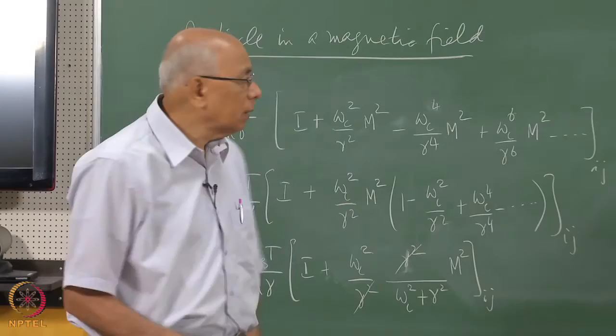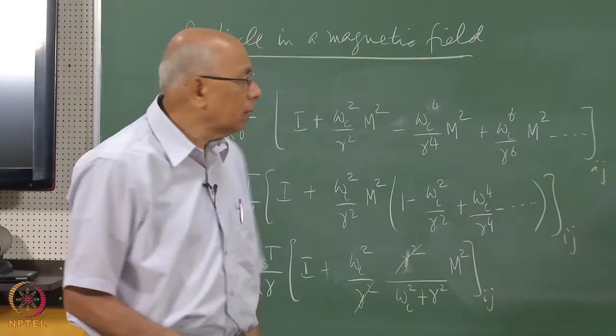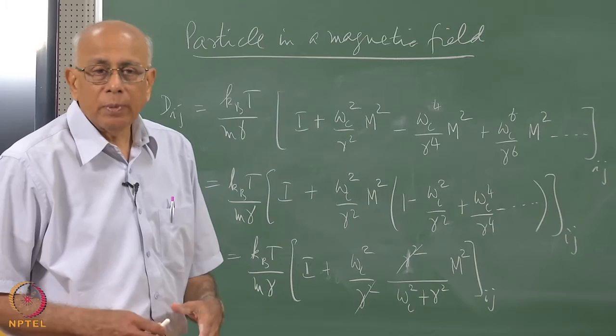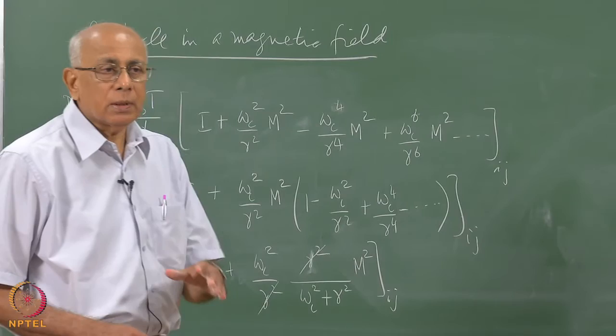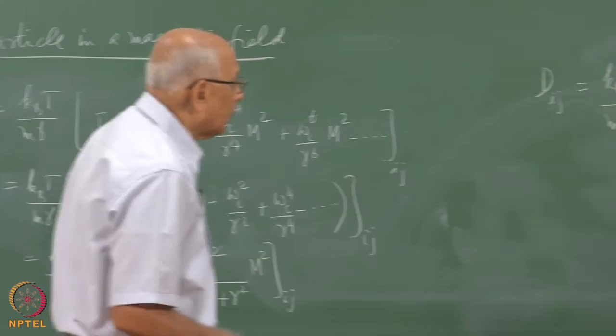This result gives the diffusion tensor directly. In the presence of the magnetic field, the problem is completely solvable and remains diffusive despite the velocity-dependent force. The diffusion constant is anisotropic: it is not the isotropic kT/(m·gamma) but is modulated in the transverse direction by the factor depending on gamma and omega_c. This is a quick method — we did not need the velocity correlation function — and it is a check that the Kubo formula gives the same answer.